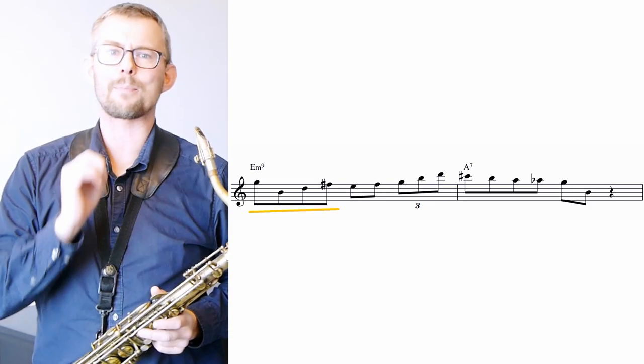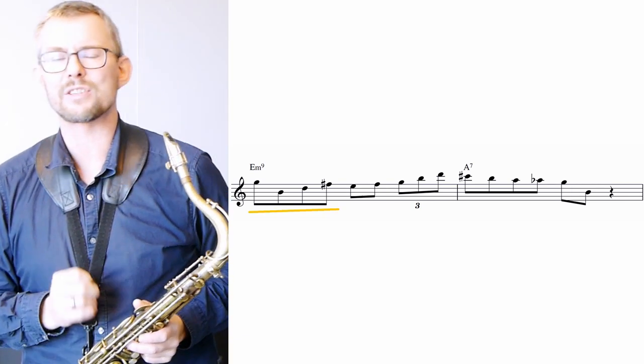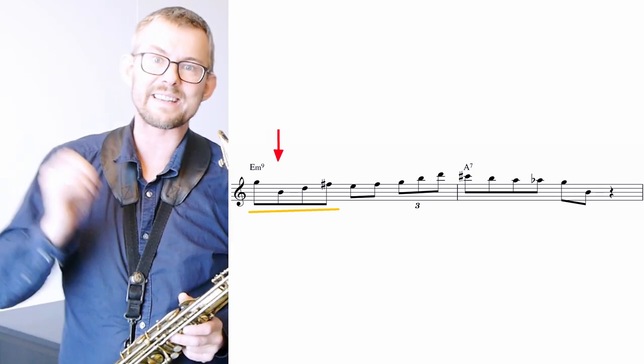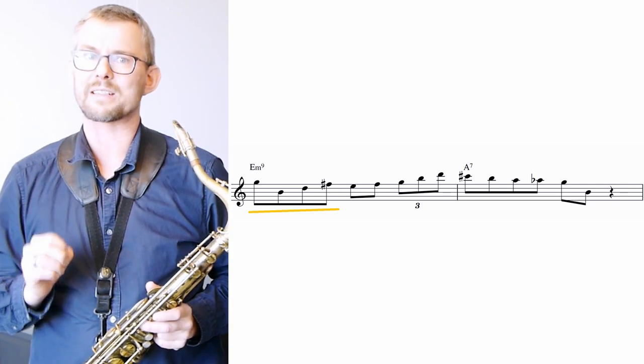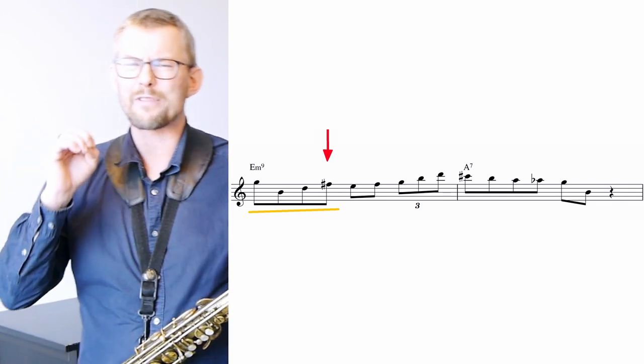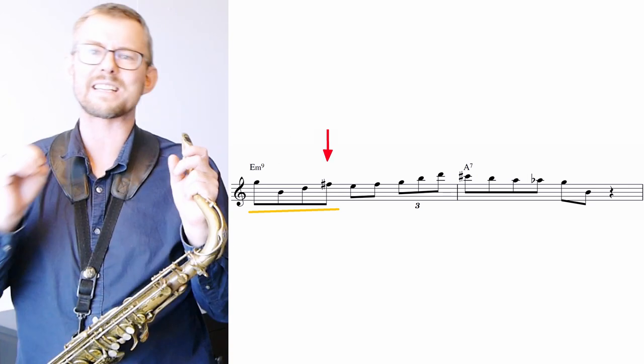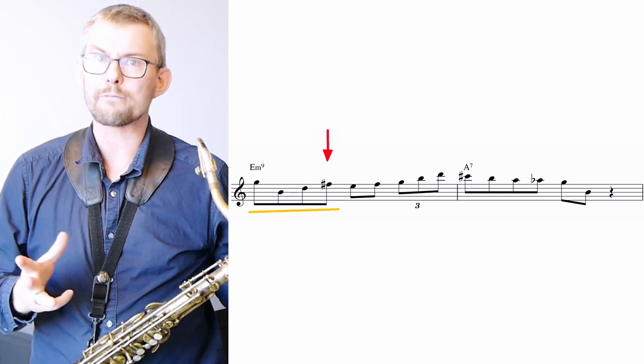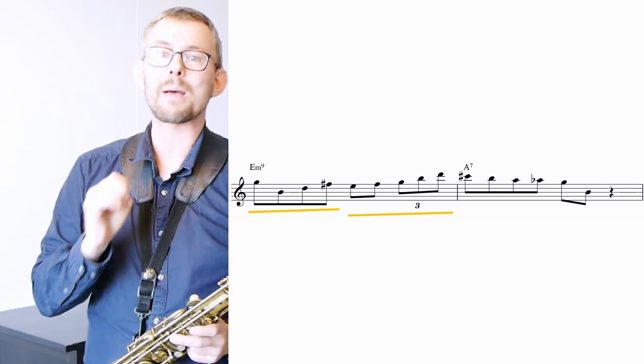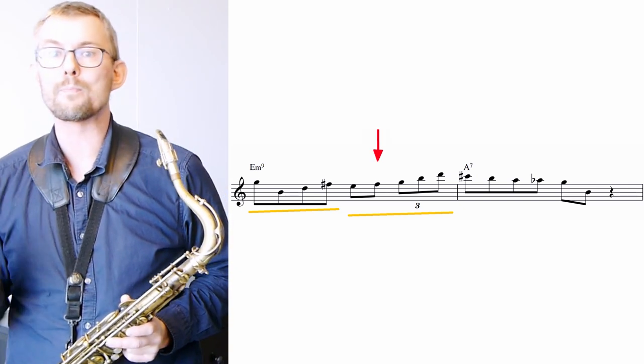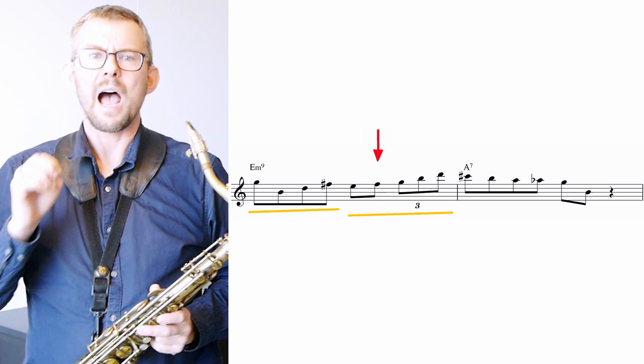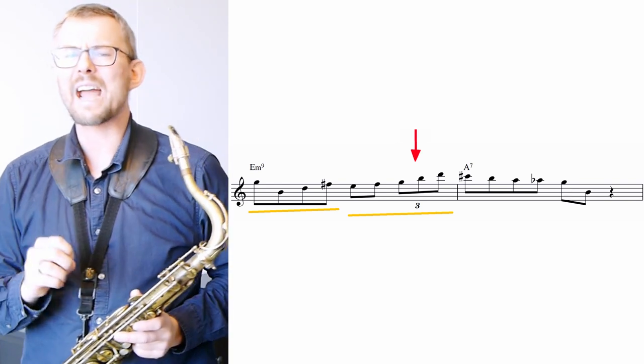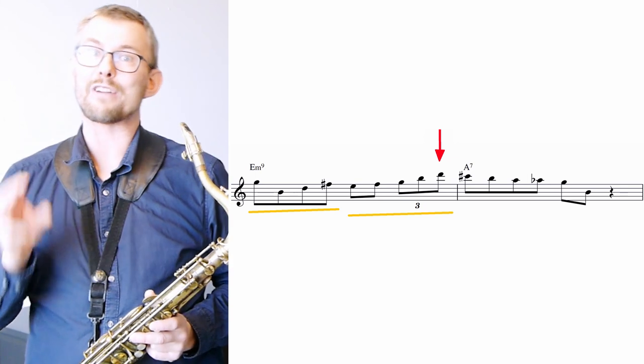In this example I play the G major 7 arpeggio as an upper structure of E minor 9. From the B I move the line down because this gives an unexpected melody line. Also I give the F sharp an accent because it's the highest placed note in the first half of the bar and is on the offbeat. The next half of bar 1 I play the G triad up with a chromatic approach note, the F sharp. I change the rhythm from eighth notes to triplets. On the highest note, the D, I give a clear accent.